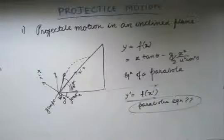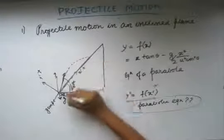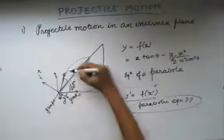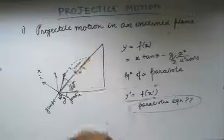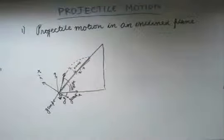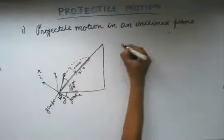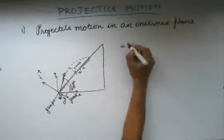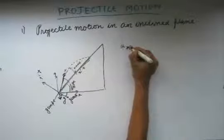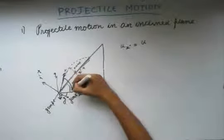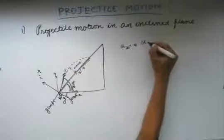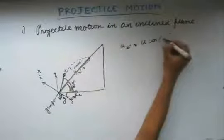Let's derive formulas for the time of flight, the maximum distance in the x' direction, and the maximum height attained by the particle. The initial velocity of the particle in the x' direction: the full angle of projection is alpha, the incline angle is beta, so the angle with the incline is (α − β). Therefore, the initial velocity in x' is u cos(α − β), and in y' is u sin(α − β).